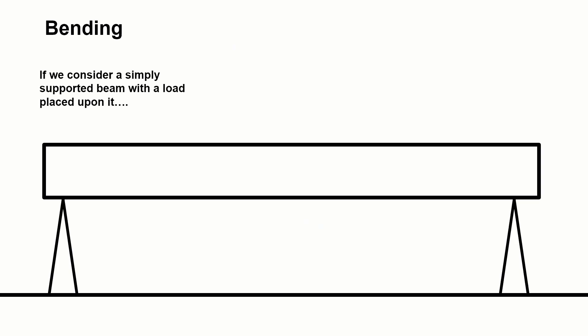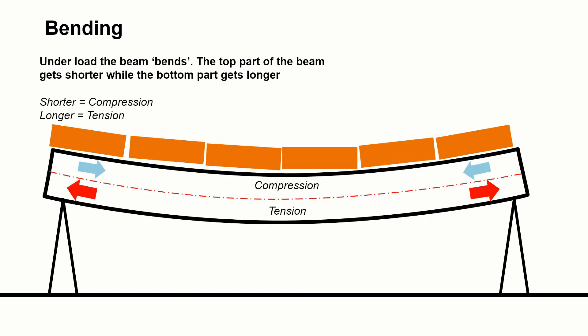We can think about a simple beam when we try to understand how things bend and the forces that are acting upon that. If we think about a simple beam and we drop a load of bricks onto it, the beam is going to be under load. The two triangles at the other end are just a representation of a support. What happens to that beam when we put weight on it? It would bend. Under load, the beam bends.